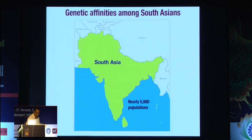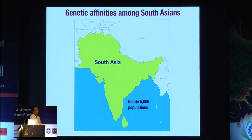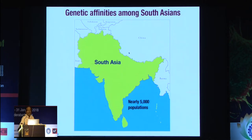We took a large number of samples and thought it would be a good idea to extend beyond India. So we went to countries like Sri Lanka, Nepal, Bangladesh, and Pakistan, collecting about 2,800 samples, and started looking at whether some uniqueness is emerging from the endogamy marriage practice.